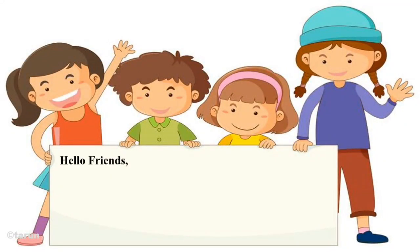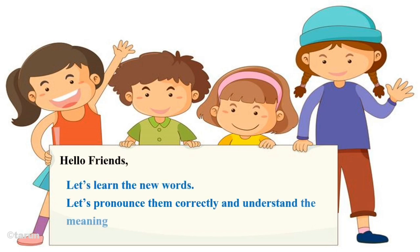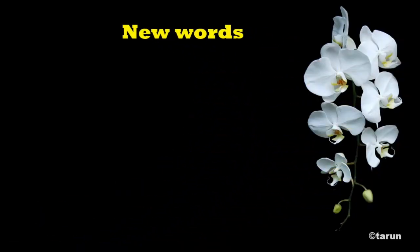Let's start this story. Before starting the story, let's learn the new words. Let's pronounce them correctly and understand the meaning. So what are the new words prior to the reading of the story? The first new word is 'geese,' spelled G-E-E-S-E. It is a kind of bird, and actually this is the plural of 'goose.'